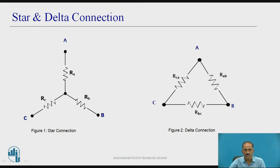You can see the figures showing the schematic of star and delta connections. Figure 1 is a schematic diagram for star connections, with three terminals A, B, C and resistors RA, RB, and RC connected like a star. The schematic for delta connections shows resistors RAB connected between terminals A and B, RBC between terminals B and C, and RCA — all connected like a delta structure.